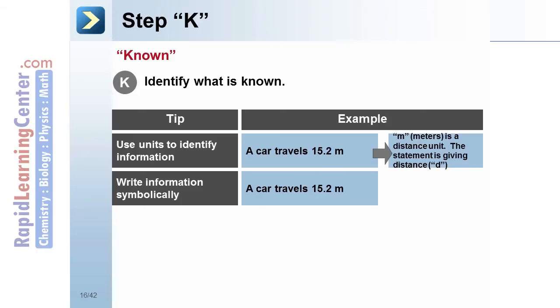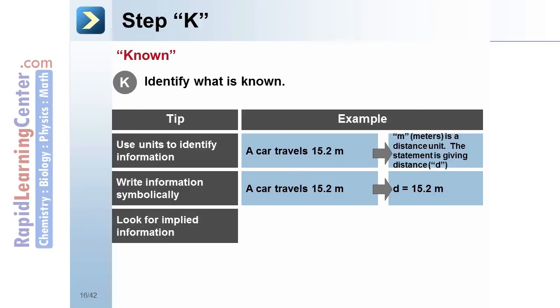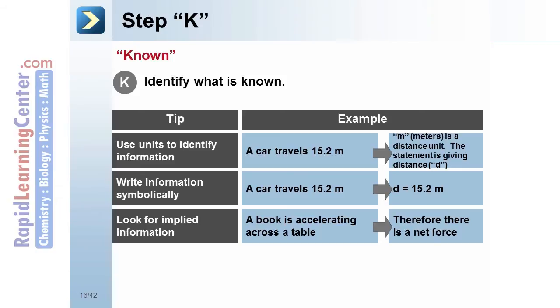We can also write information to symbolize it. In that case, we could write D equals 15.2 meters. And there may be implied information. A book is accelerating across a table means there is a net force which causes the acceleration.